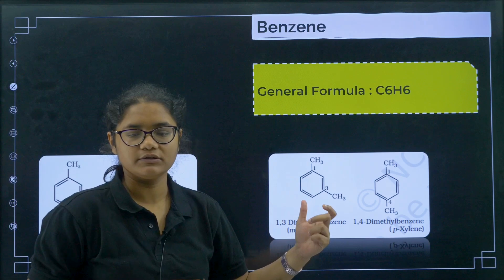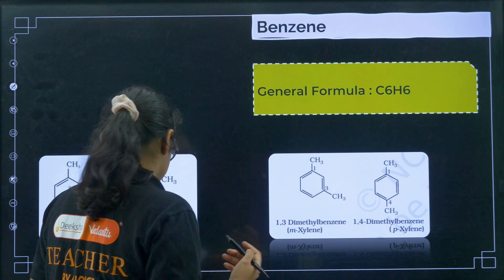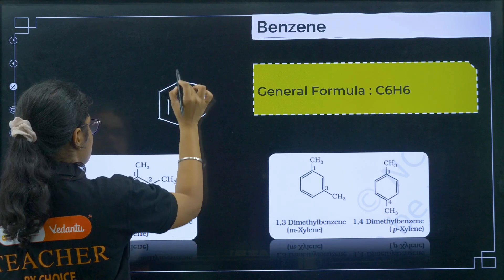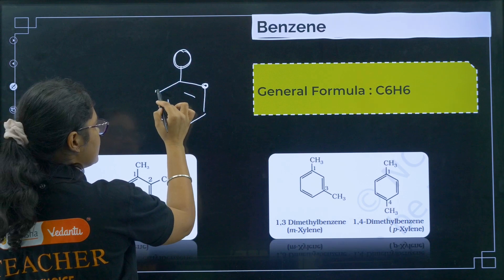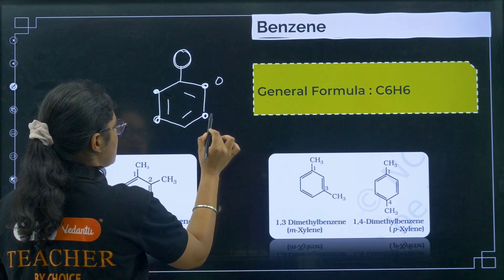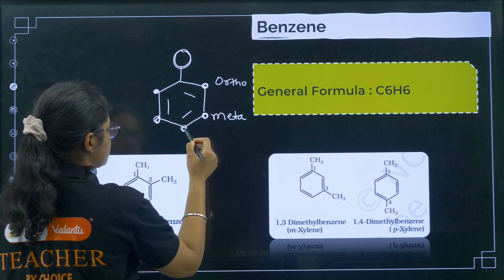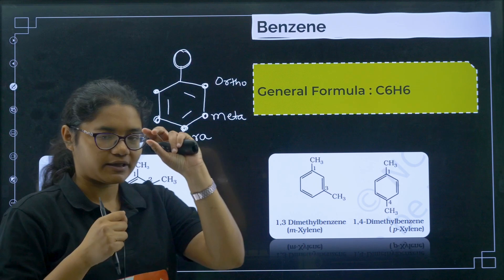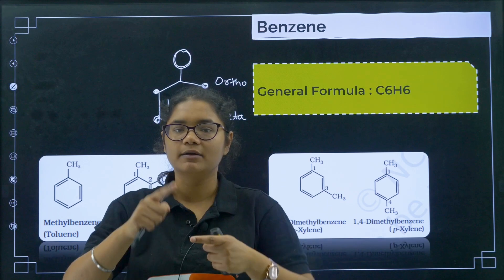The general formula of benzene is C6H6. Now, regarding positions on benzene: if you have any group attached at one position, the next two positions on either side are called ortho positions, the following two are called meta positions, and the exact opposite position is called the para position.